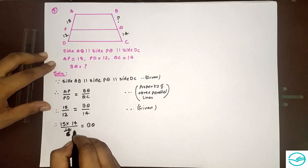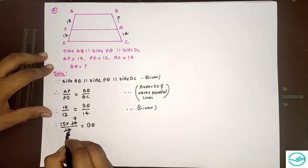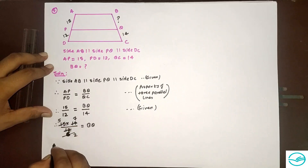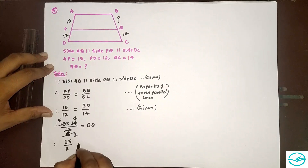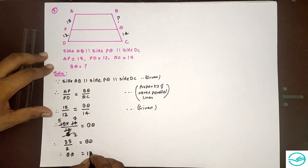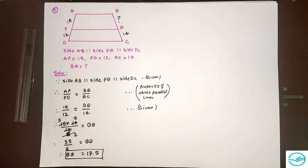Next part: AP is 15, PD is 12, and QC is 14. Find the value of BQ. Since AB is parallel to PQ and PQ is parallel to DC, by the property of three parallel lines, AP divided by PD equals BQ divided by QC. Substituting: 15 divided by 12 equals BQ divided by 14. Therefore BQ equals 15 into 14 divided by 12, which gives BQ equals 17.5 units.